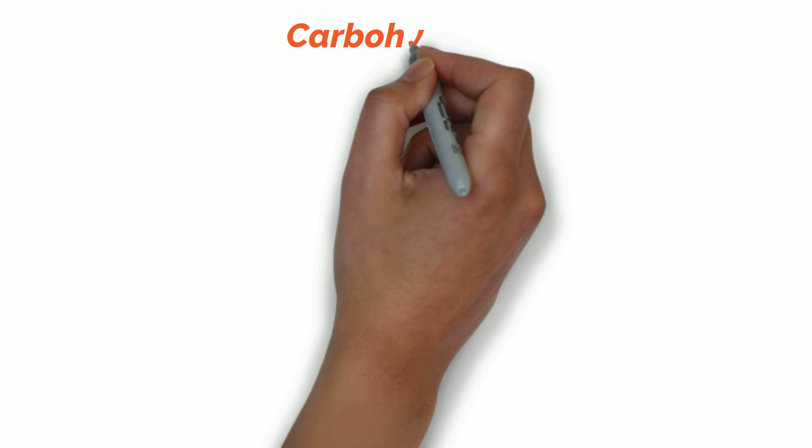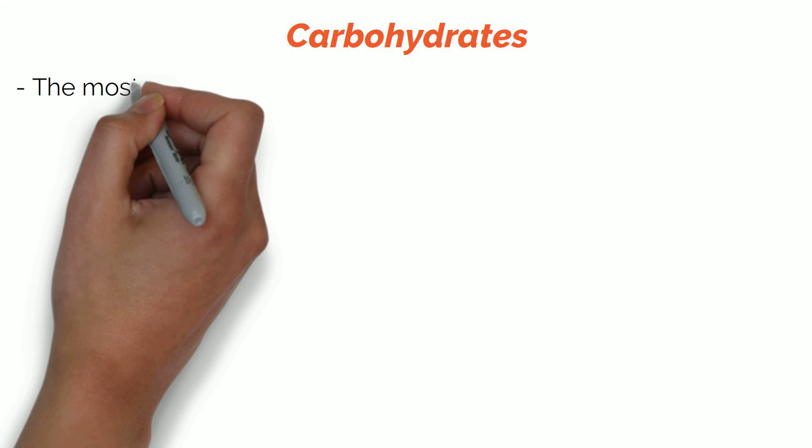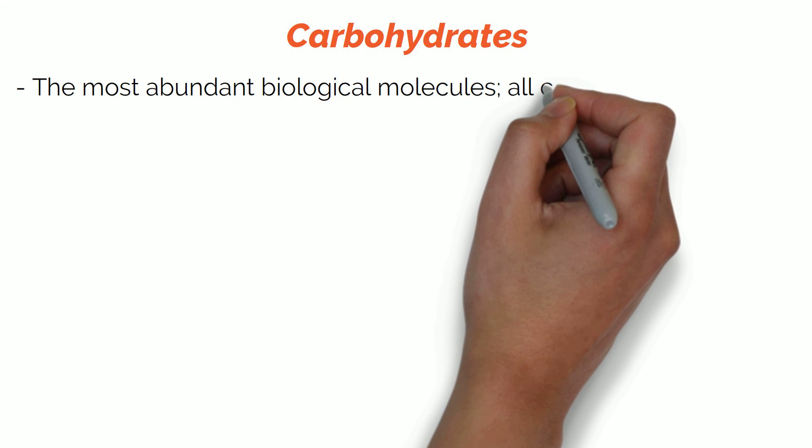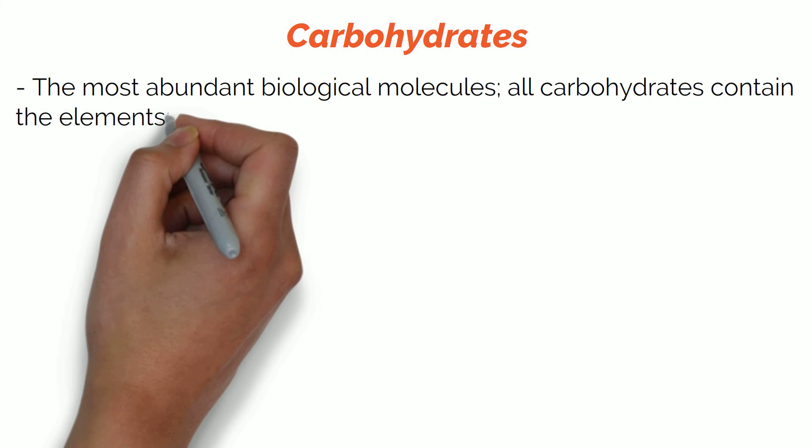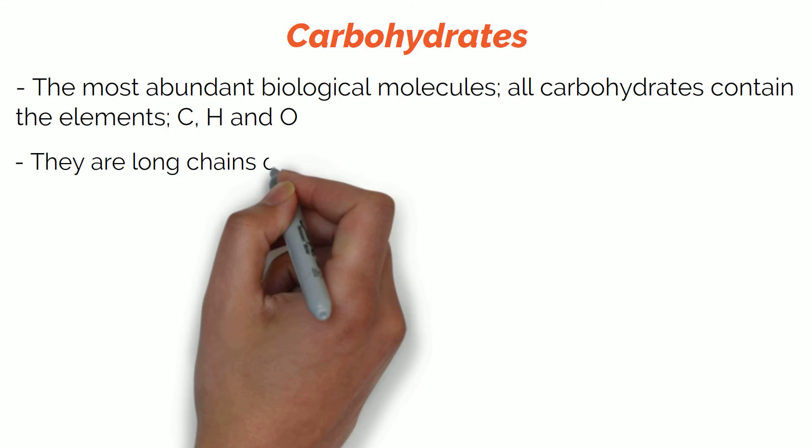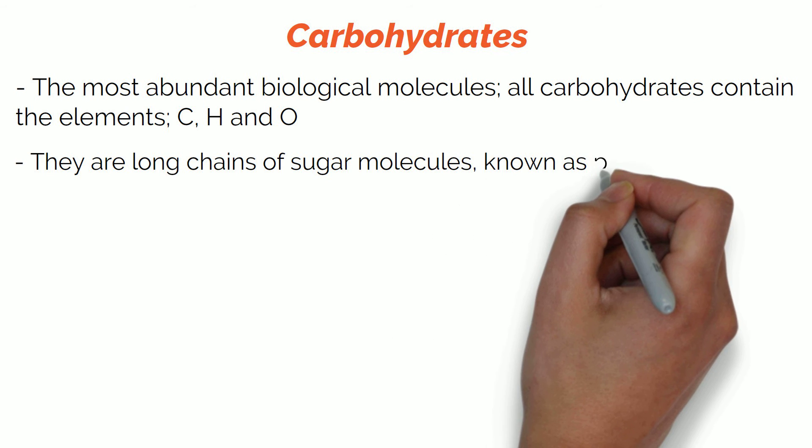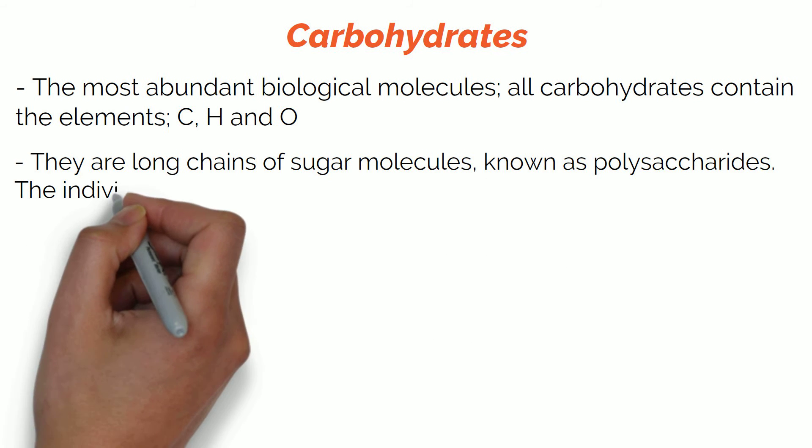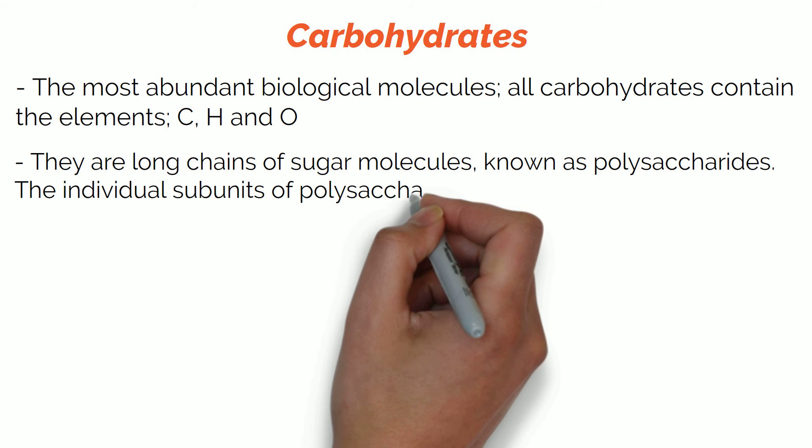Now we will move on to carbohydrates. Carbohydrates are the most abundant biological molecules, all containing carbon, hydrogen and oxygen. Sugars are examples of carbohydrates. Long chains of sugar molecules are known as polysaccharides. The individual subunits of polysaccharides are called monosaccharides.